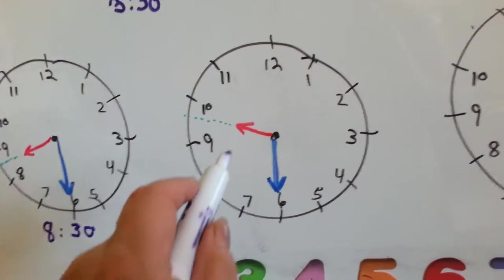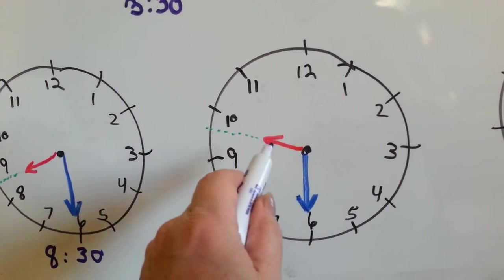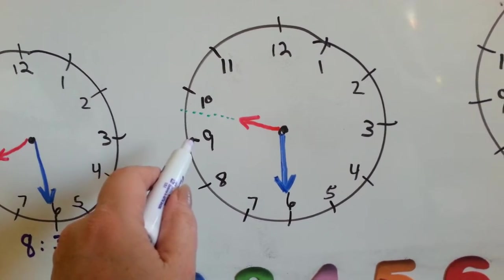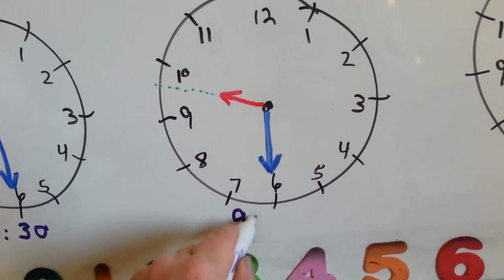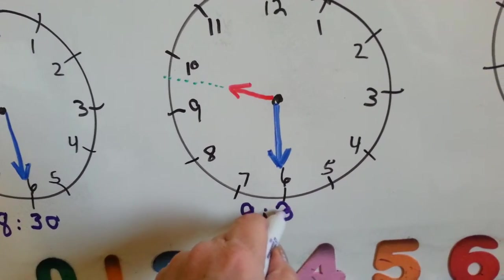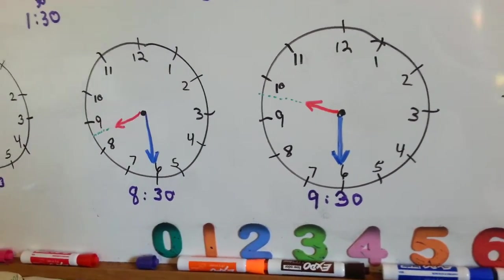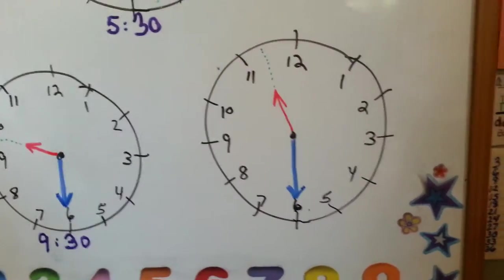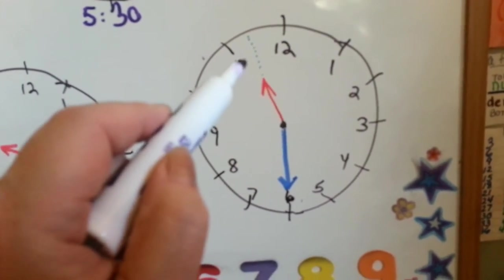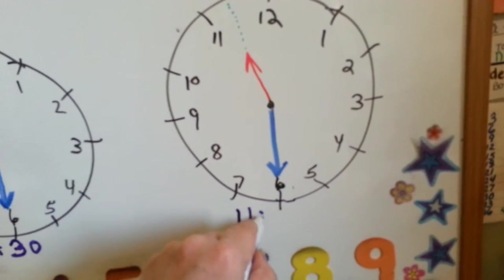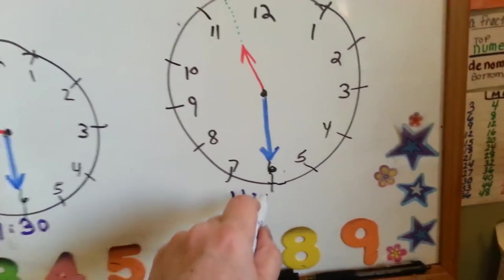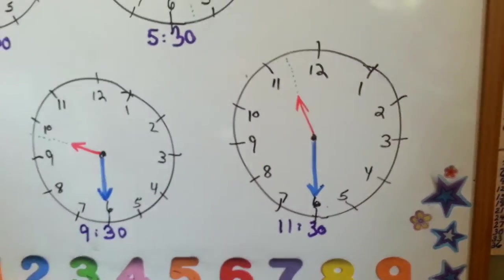How about this one? The hour hand is what we go with first, remember. It's pointing in between the 9 and the 10. We always start with the smaller hand and pick the smaller number. 9 is smaller than 10, so we know it's 9 something. And it's pointing at the 6, which means 30. It's 9:30. How about this one? The hour hand is pointing in between the 11 and the 12. We go with the smaller number, the 11. We put our colon for o'clock. It's pointing at the 6, which means 30. So this is 11:30.